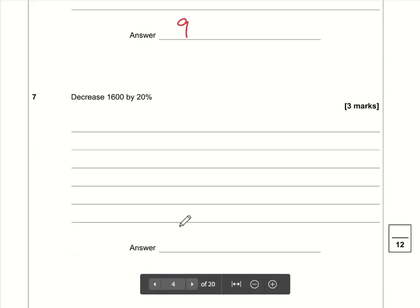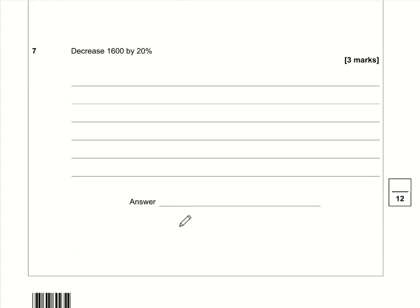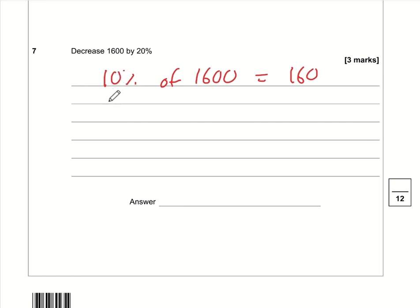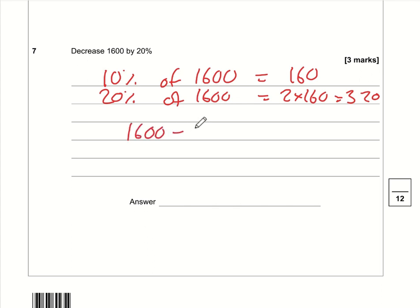Question 7: decrease 1600 by 20%. I'll work out 10% of 1600 first — that's 160, since 10% means dividing by 10. So 20% is double that: 2 × 160 = 320. Since we're decreasing, we subtract 320 from 1600. Using a calculator, 1600 − 320 = 1280.